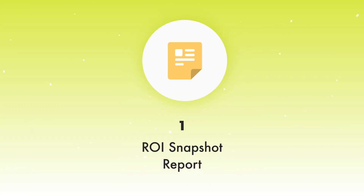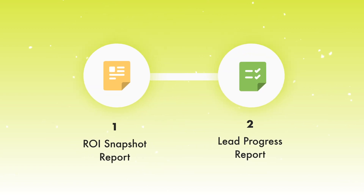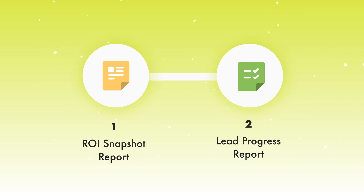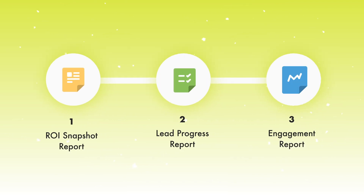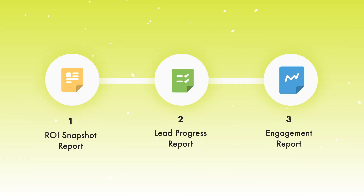You might be asking yourself, what do I do now that my ads are running? In this video, you'll learn how to create three custom reports inside of Ads Manager: the ROI snapshot report for measuring your sales results, the lead progress report for measuring your lead costs, and the engagement report for measuring how engaging your Facebook ads are. Be sure to stick around to the end where I'll show you how to share these reports with your team members, bosses, or clients.